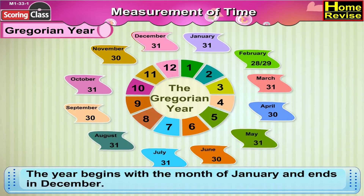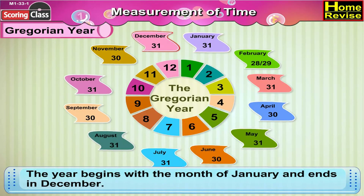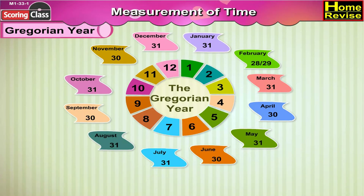The year begins with the month of January and ends in December, then a new year starts again in January.